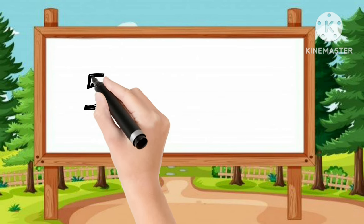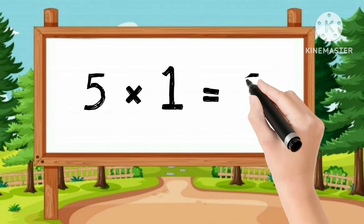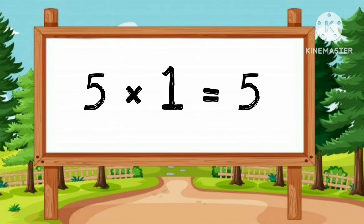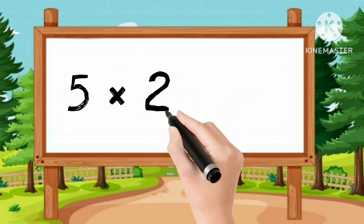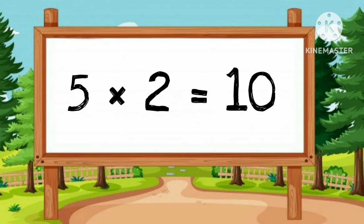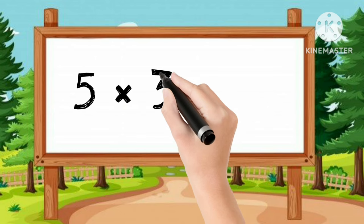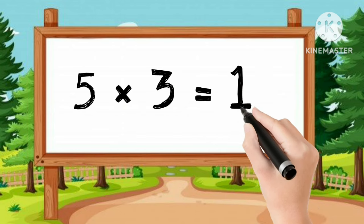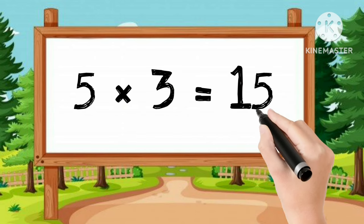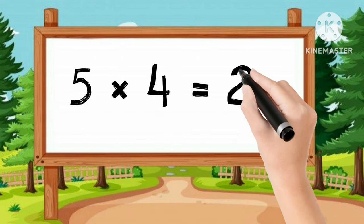Let's learn table of 5. 5-1s are 5. 5-2s are 10. 5-3s are 15. 5-4s are 20.